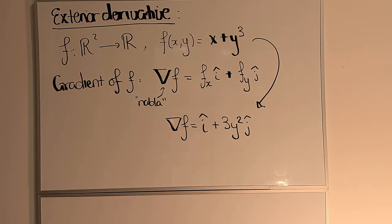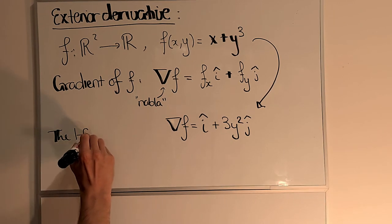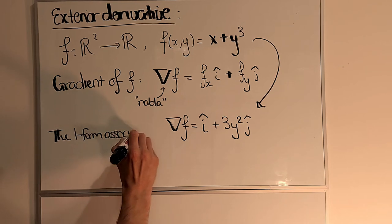Now to any vector field, I have an associated one form. The one form associated to ∇f